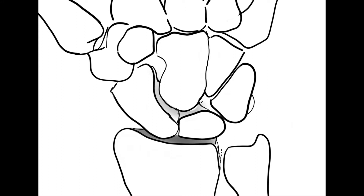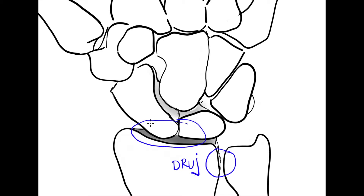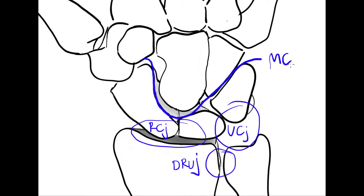The wrist is formed by the distal end of the radius, the ulna, and by the carpal bones. There are several components that participate in the movements of the wrist: the distal radial ulnar joint, the radiocarpal joint, the ulnocarpal joint, and the midcarpal joint.